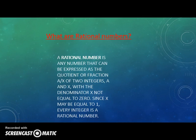What are rational numbers? A rational number is any number that can be expressed as the quotient or fraction a/x of two integers, a and x, with the denominator x not equal to zero. Since x may be equal to 1, every integer is a rational number.